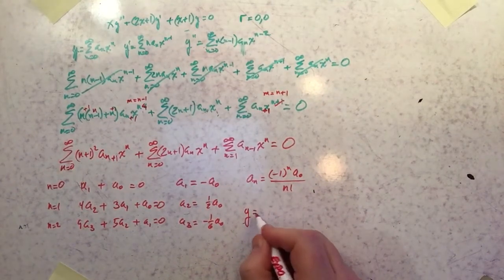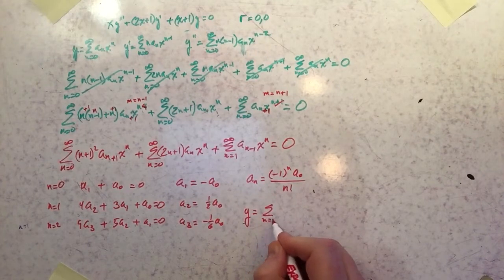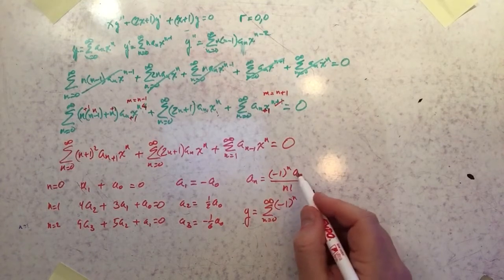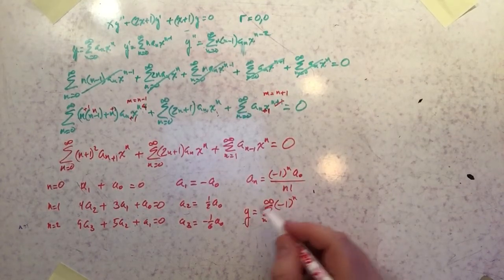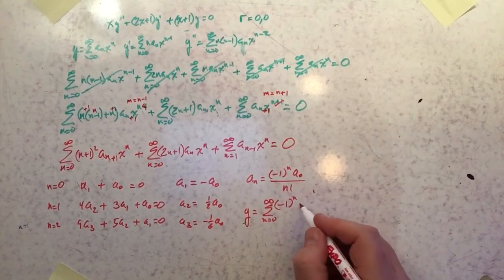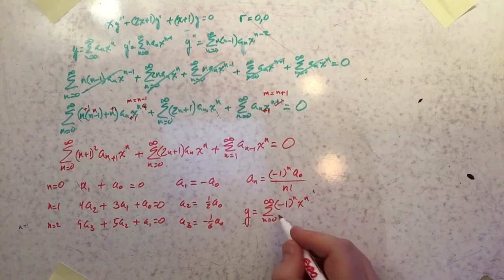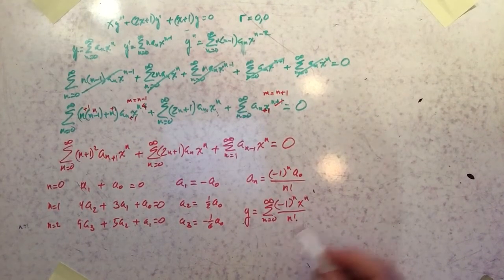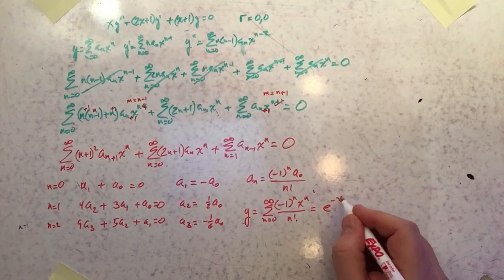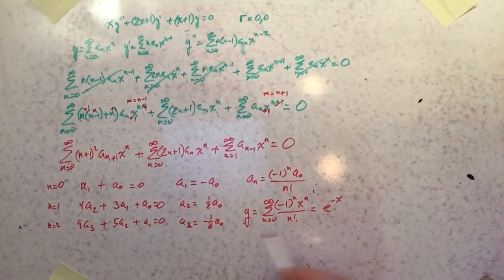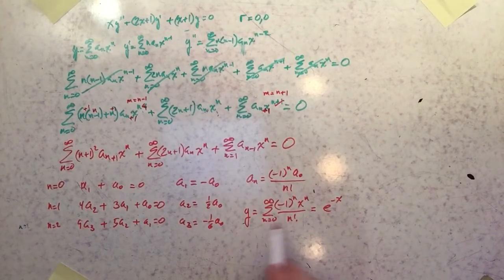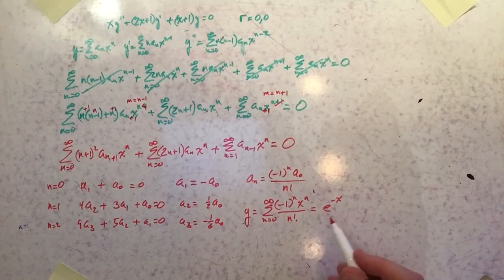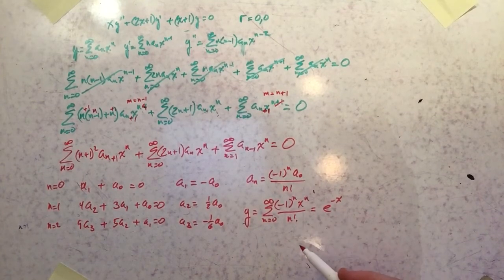We can build the series now. It's Σ(n=0 to ∞) (−1)ⁿ xⁿ / n!, setting a₀ = 1. You'll recognize this as the Maclaurin series for e^(−x). So our first solution is y₁ = e^(−x), and when we write the full basis of solutions we'll restore the constant a₀ in front.